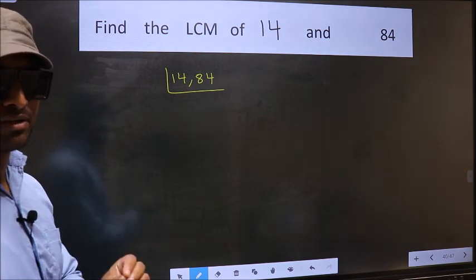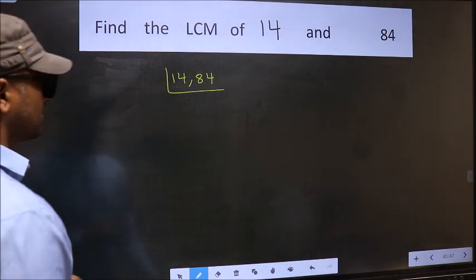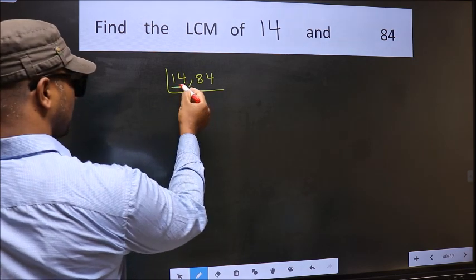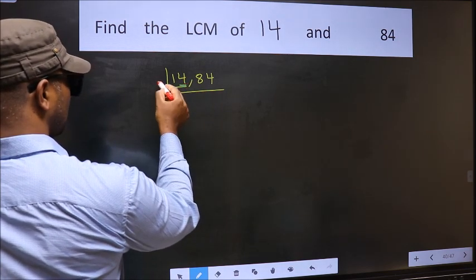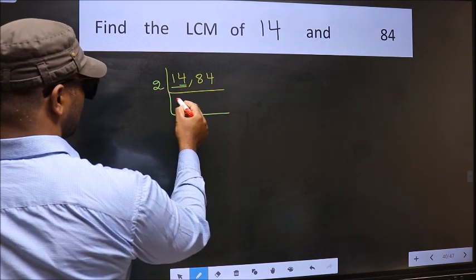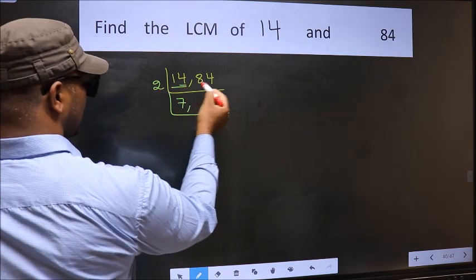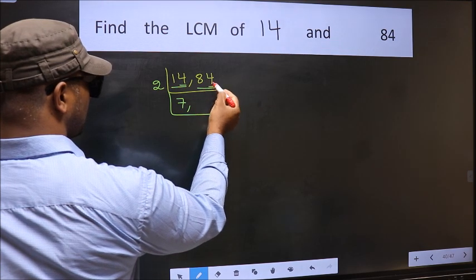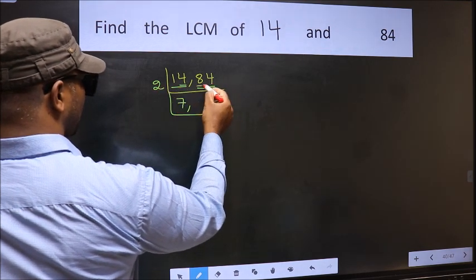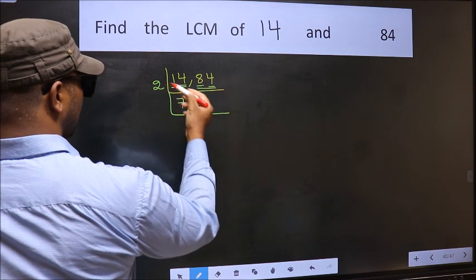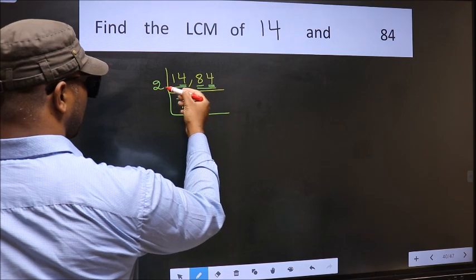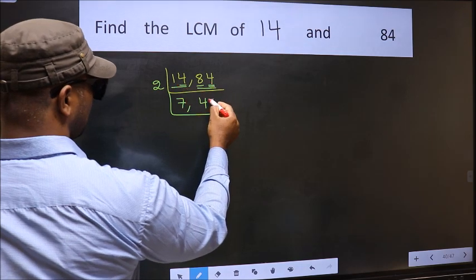Now focus on the first number, which is 14. The last digit is 4, so it's divisible by 2. When do we get 14 in the 2 times table? 2 times 7 is 14. The other number, 84, last digit 4, also divisible by 2. First part 8: 2 times 4 is 8. The other part 4: 2 times 2 is 4.